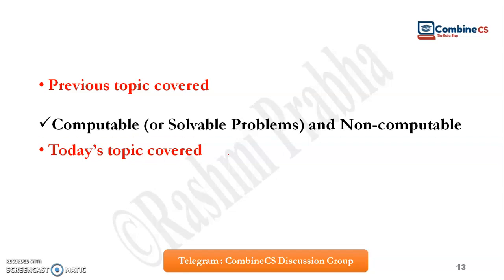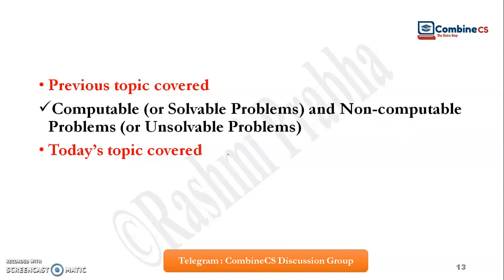Let us see what we covered yesterday. Yesterday we covered computable and uncomputable, non-computable problems. For a quick revision: what is solvable? Solvable means if there is a problem and you have a certain algorithm or procedure to solve that problem, it means it is computable and hence it is also known as solvable.